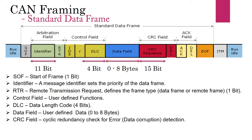The frame also contains a 15-bit cyclic redundancy check, or CRC field, which is used to detect any data corruption during transmission. The sender computes the CRC before sending the frame. After receiving the frame, each receiver computes the CRC again and compares it. If the CRC doesn't match, the receiver will generate an error frame.